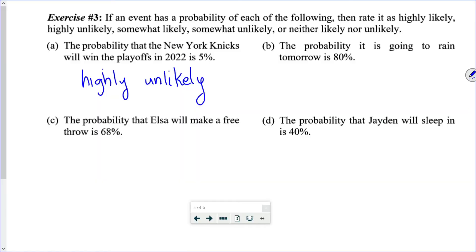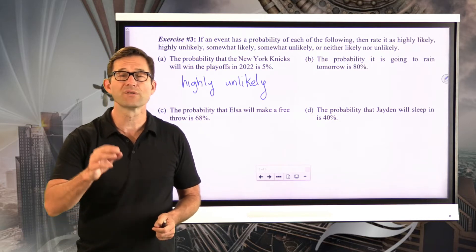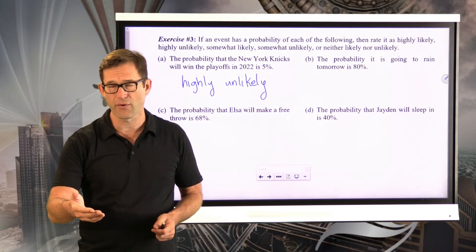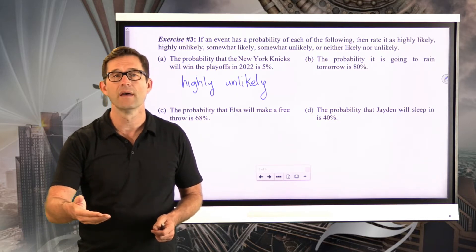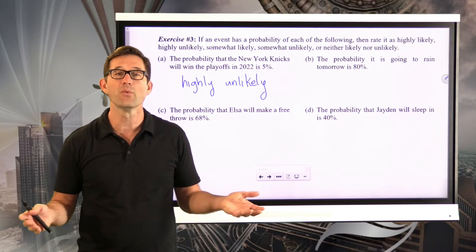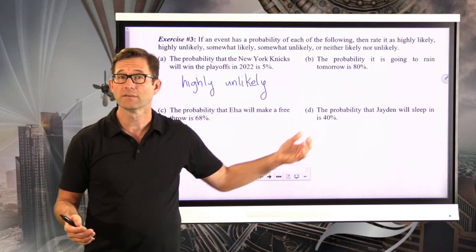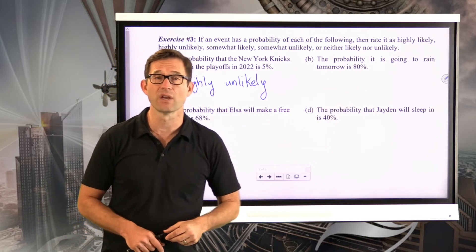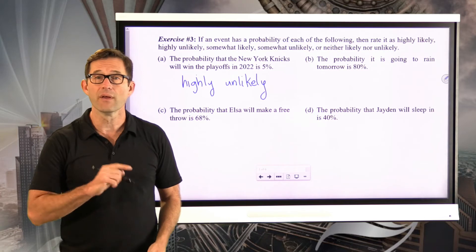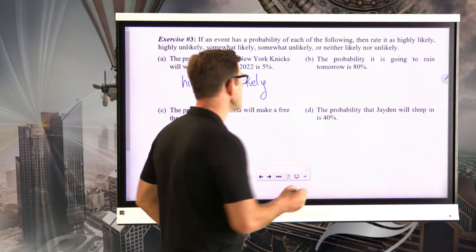Letter B: the probability it is going to rain tomorrow is 80 percent. That's pretty high. If you were planning a picnic and your weather app said the probability of rain is 80 percent, you'd probably put that off. It's not a guarantee — there's still a 20 percent chance it won't rain — but 80 percent is highly likely.